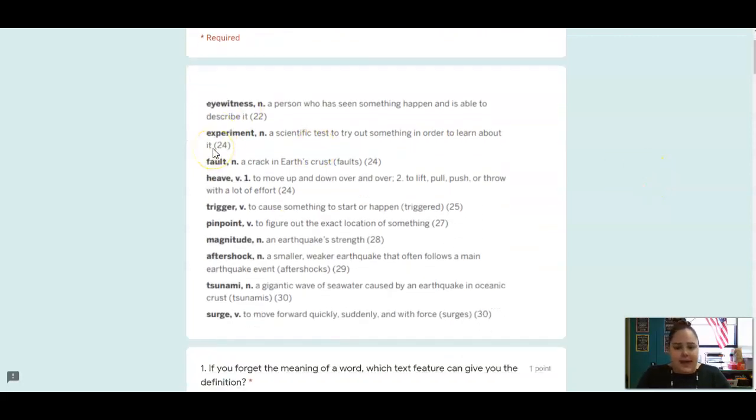An eyewitness is a noun, a person who has seen something happen and is able to describe it. An experiment is a noun, a scientific test to try out something in order to learn about it. A fault is a noun, a crack in Earth's crust. Heave is a verb, to move up and down over and over, or to lift, pull, push, or throw with a lot of effort.